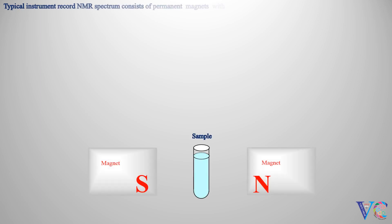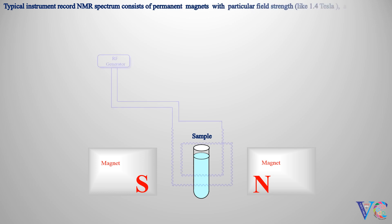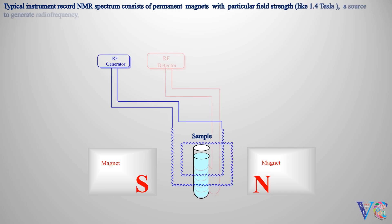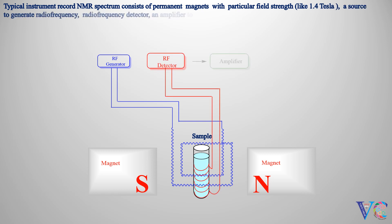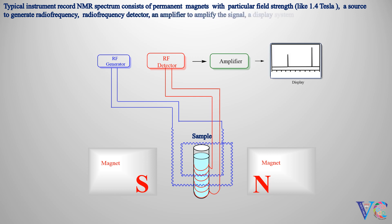A typical instrument to record an NMR spectrum consists of permanent magnets with a particular field strength, like 1.4 tesla, a source to generate radio frequency, a radio frequency detector, an amplifier to amplify the signal, a display system, and a recorder.